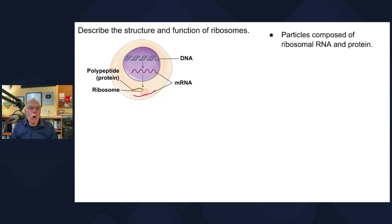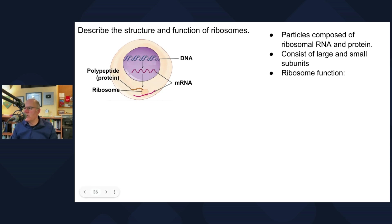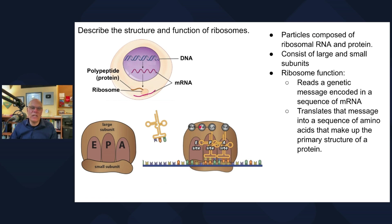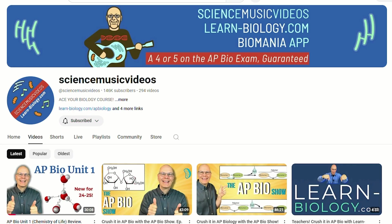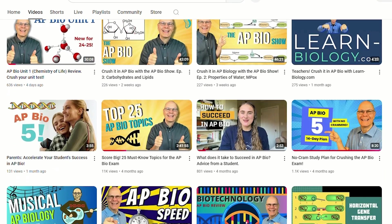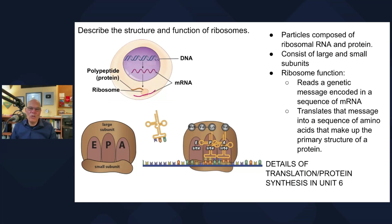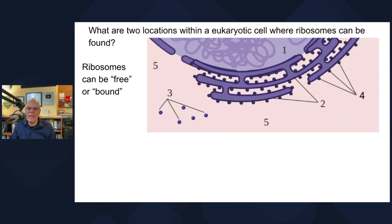Ribosomes are particles composed of RNA and protein — that RNA is called ribosomal RNA — and they consist of a large subunit and a small subunit. The ribosome's function is to read a genetic message encoded in a sequence of mRNA and translate that message into a sequence of amino acids that make up the primary structure of a protein. There are four levels to proteins. The details of translation and protein synthesis are mind-blowingly cool and will be covered in Unit 6.